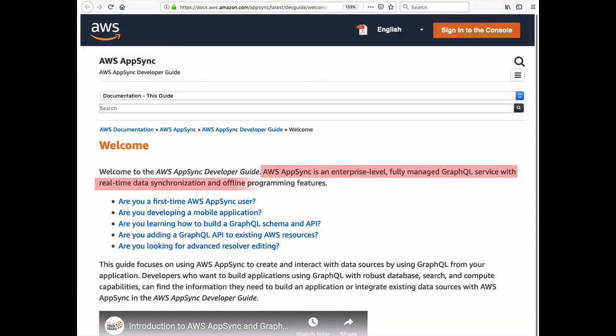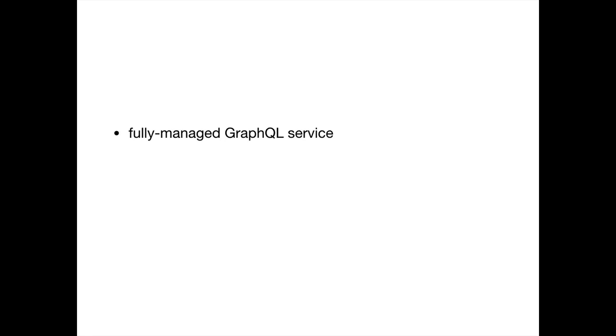AWS AppSync is an enterprise-level, fully-managed GraphQL service with real-time data synchronization and offline programming features. Fully-managed GraphQL service means you'll provide the configuration, like the schema and resolvers, and AWS will manage the GraphQL server process and the underlying infrastructure.